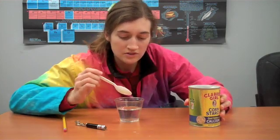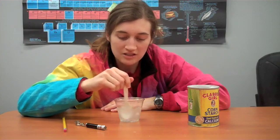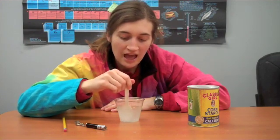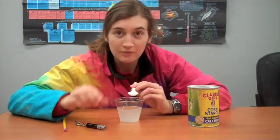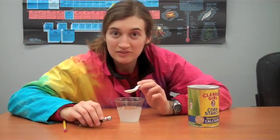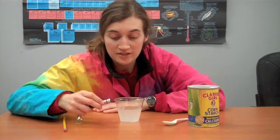Cornstarch won't dissolve in the water, it will make a colloid, which makes it just kind of milky, and that allows you to see the light beam, because we can only see light when it reflects off something, and in this case it will reflect off the cornstarch.